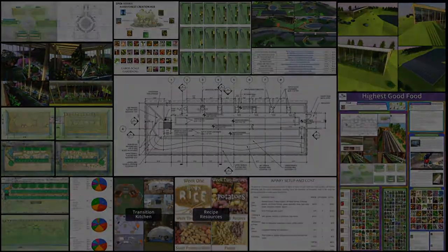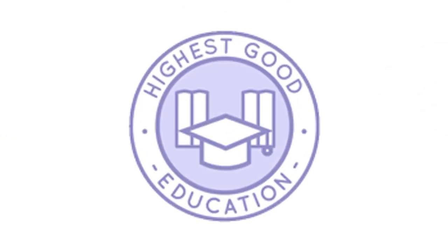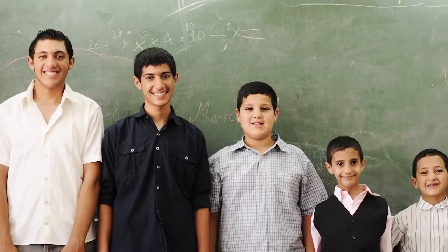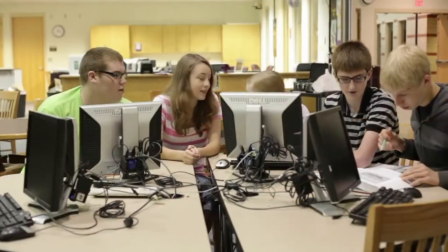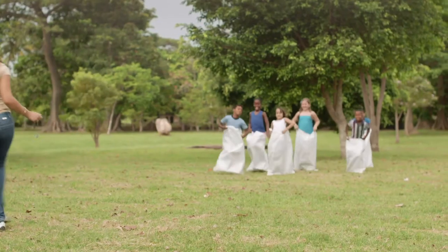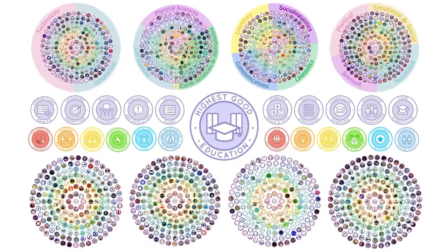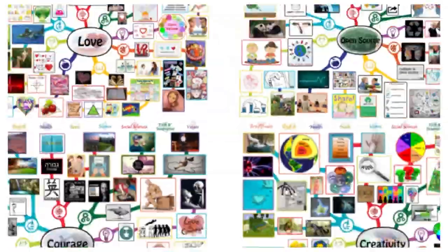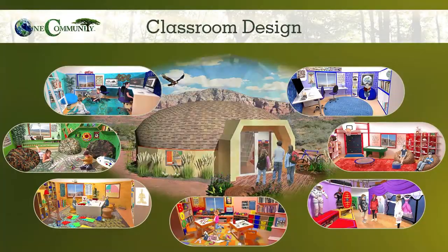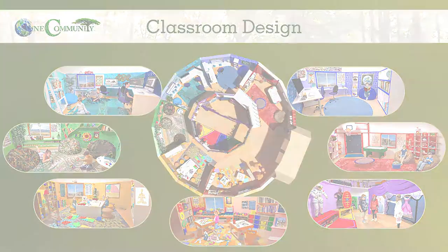The next component is Highest Good Education. This component is complete and pretty much ready to launch once we're on the property. One Community's approach to highest good education is designed for all age groups, adaptable to any schooling environment, inspiring and fun for all participants, and includes national standards, all subjects, lesson plans, teaching strategies, learning strategies and tools, classroom design, and more.